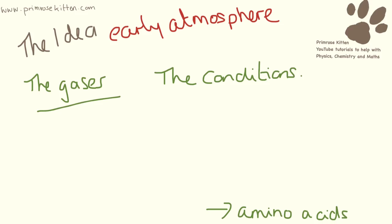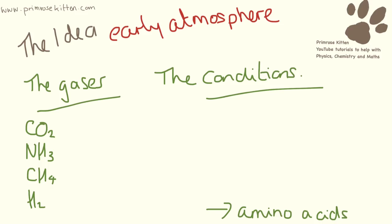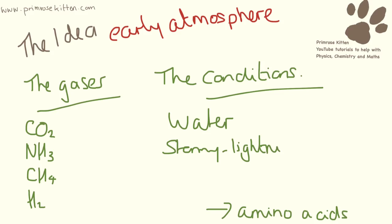The gases they wanted to put in were carbon dioxide, which there was a lot of in the early atmosphere, ammonia, methane, and hydrogen gas. The conditions they used included a lot of water to simulate the oceans. There was a lot of rain — it was a very, very stormy time. And to replicate that stormy time, they used electrical sparks to represent the large amounts of lightning that were in the atmosphere at the time.